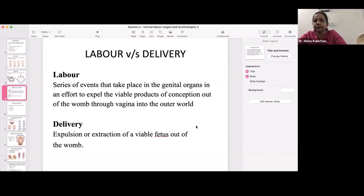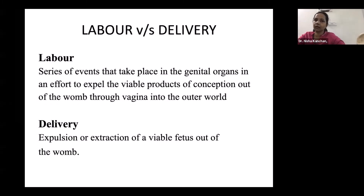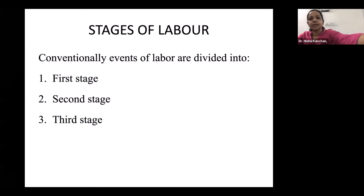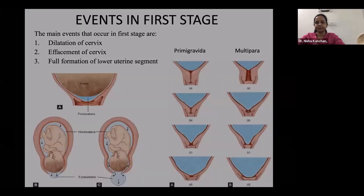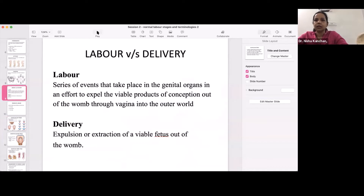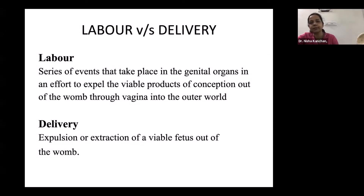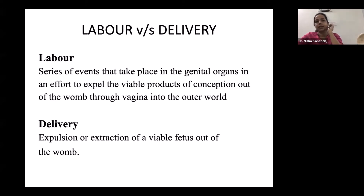In the next part: labor and its stages. Labor is a series of events which take place in the genital organs in an effort to expel the viable products of conception out of the womb through the vagina. These events include uterine contractions, descent, and dilatation of the cervix. This is distinct from delivery, which is the expulsion or extraction of a viable fetus — delivery can include both normal vaginal delivery and cesarean section, whereas labor strictly refers to events in the genital organs.